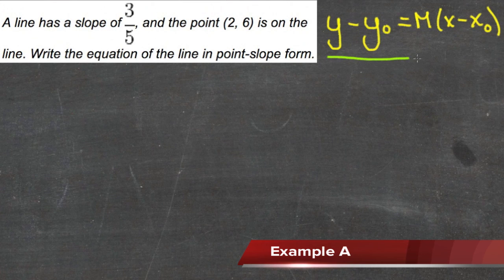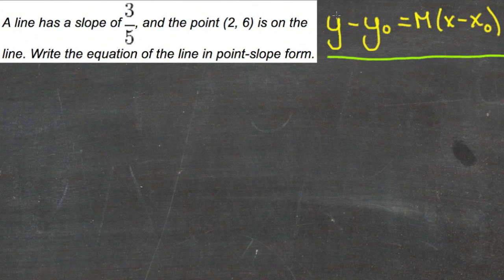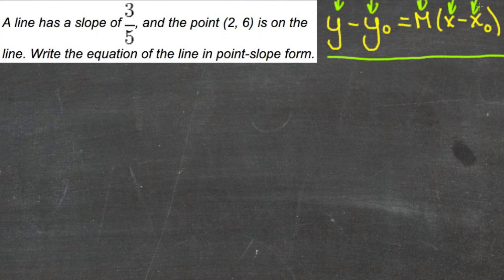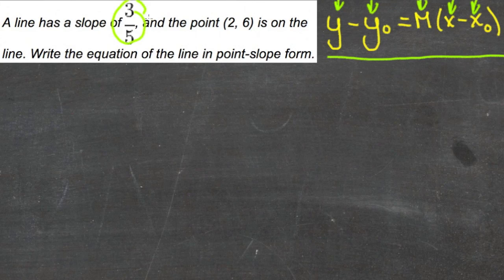So if you look at point-slope form up here on the top right you can see that there's a space for the y-variable and then a y-coordinate, and then the slope and an x-variable and the x-coordinate. Well, we're given a slope 3/5 and we're given an x-coordinate and a y-coordinate.